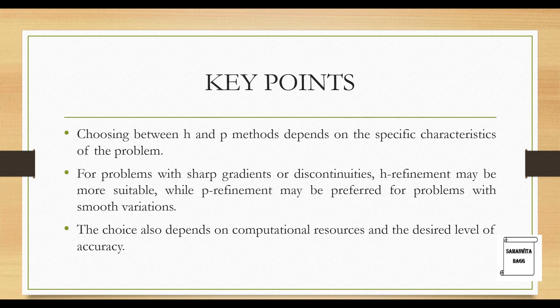Last, we will talk about some key points of this topic. Choosing between H and P methods depends on the specific characteristics of the problem. For problems with sharp gradients or discontinuities, H refinement may be more suitable, while P refinement may be preferred for problems with smooth variations. The choice also depends on computational resources and the desired level of accuracy. So you need to decide what is the shape that you are trying to give meshing to, what kind of solution do you want, also what kind of resources are available with you. Say you have a PC which can have a good computational speed, then you can go for H method. Your accuracy will be affected a bit, but at least you will be able to use a lot of elements and nodes and then get to the exact solution. When you have a hardware where you do not have the higher computational speed, then you can go for P type of refinement.